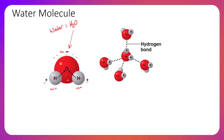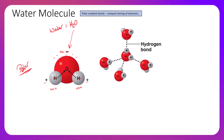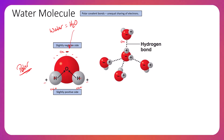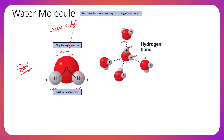Because there is a negative pole and a positive pole on each water molecule, this molecule is polar. Polar covalent bonds result from unequal sharing of electrons — there is a slightly negative side and a slightly positive side. When you add attractions between the slightly negative and slightly positive sides, you begin to form hydrogen bonds, which are weak interactions between the slightly negative oxygen side and the slightly positive hydrogen side of an adjacent water molecule.